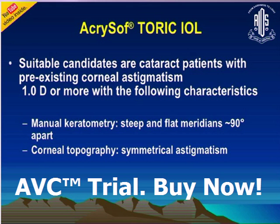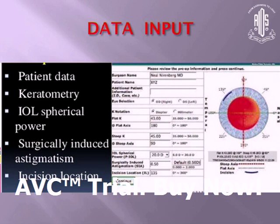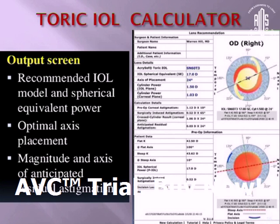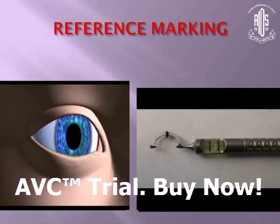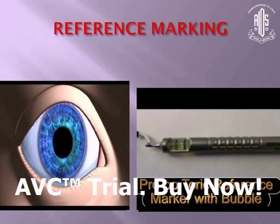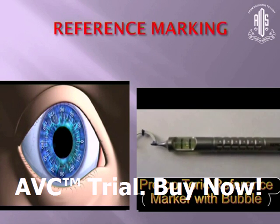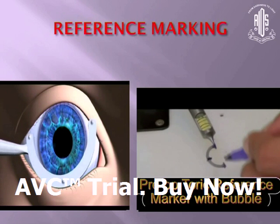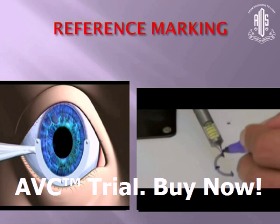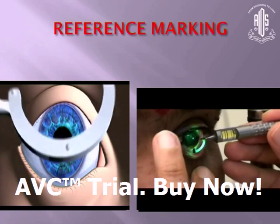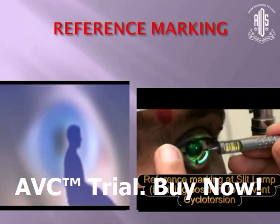The toric IOL calculator is available online — you feed in the required data and it provides the point where the incision has to be made and the steep axis where the lens has to be placed. These are the instruments necessary to implant a toric IOL. The preoperative toric reference marker is used, and the bubble marker marks the 3, 9, and 12 o'clock positions at the slit lamp.